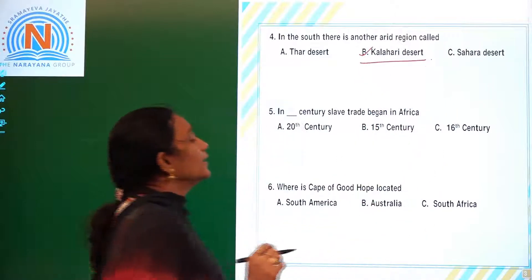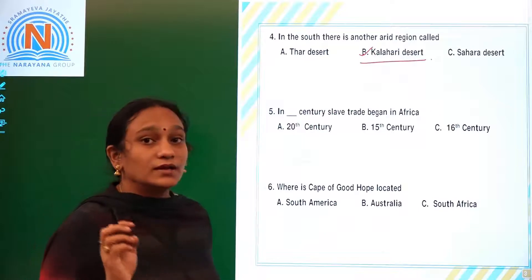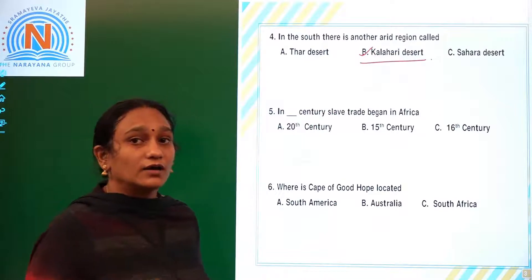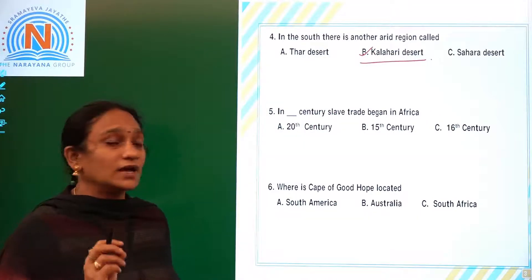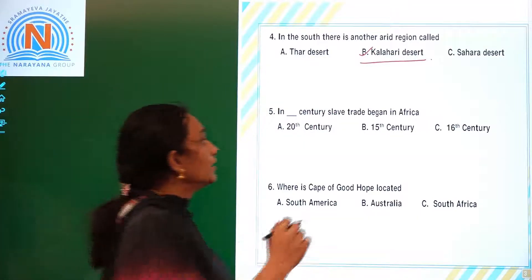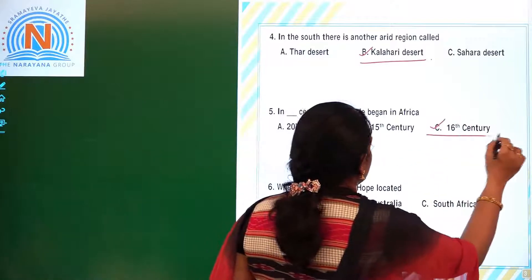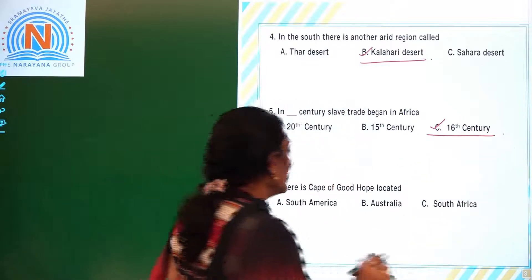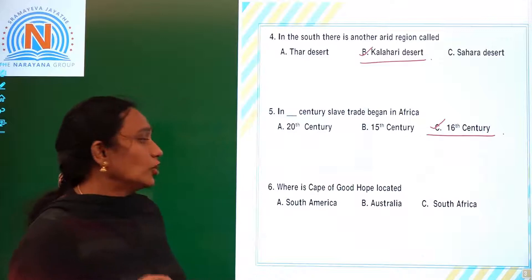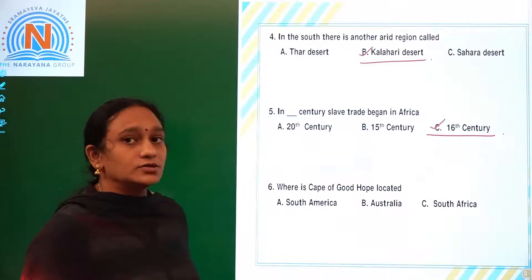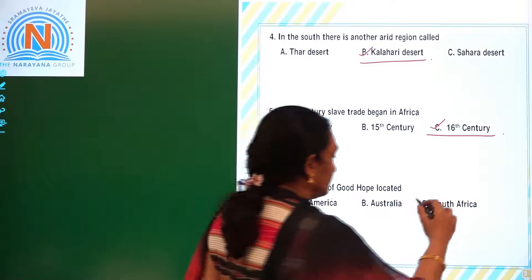The slave trade began in Africa in the 16th century. Next, where is the Cape of Good Hope located? The Cape of Good Hope is located in Africa.